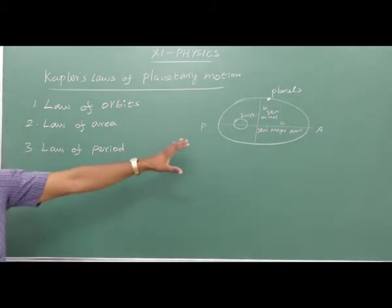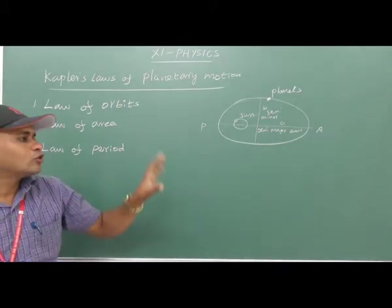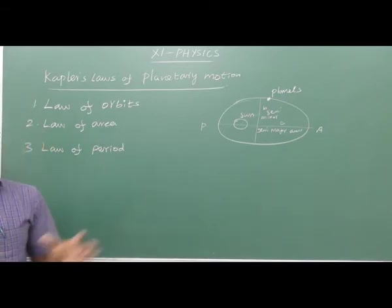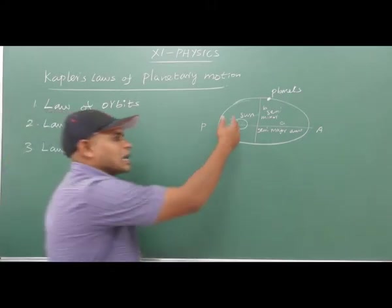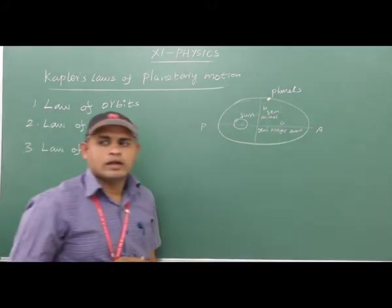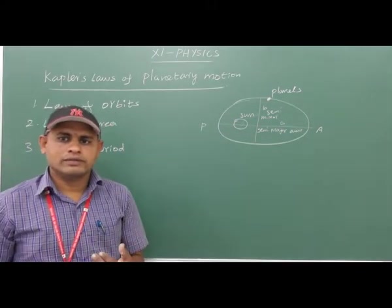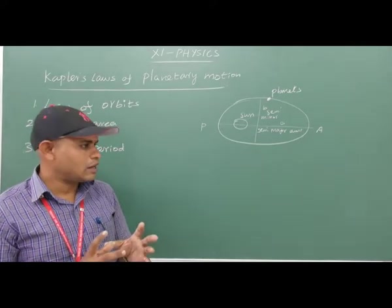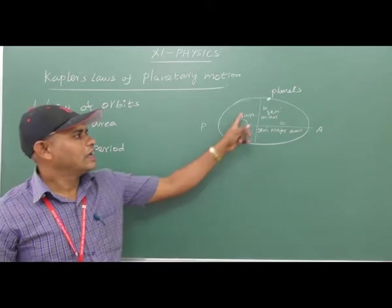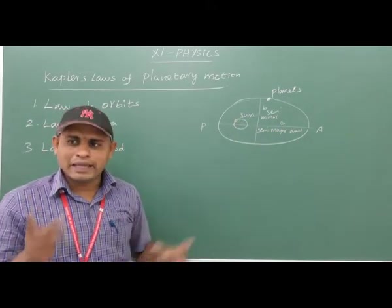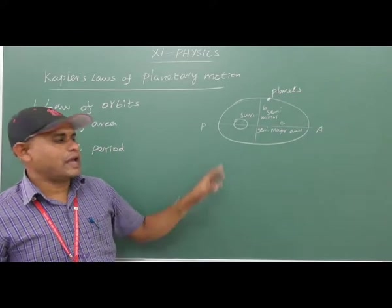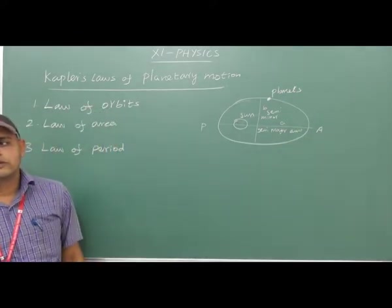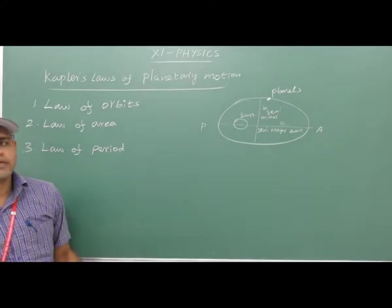Both Copernicus and Ptolemy considered planetary orbits to be circular. But Kepler discovered that the actual orbits of the planets are elliptical. This is the first law.